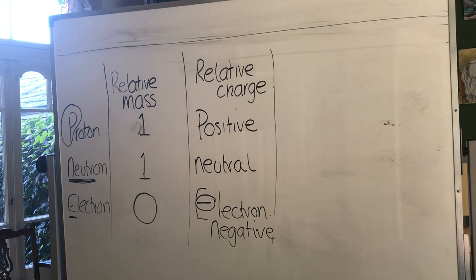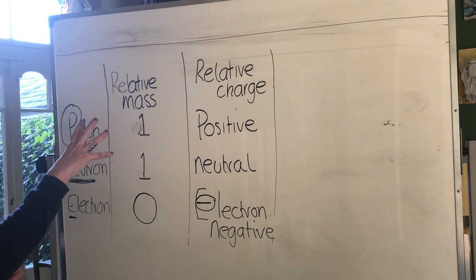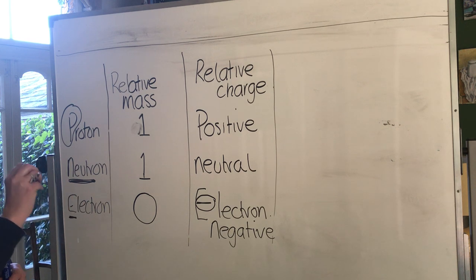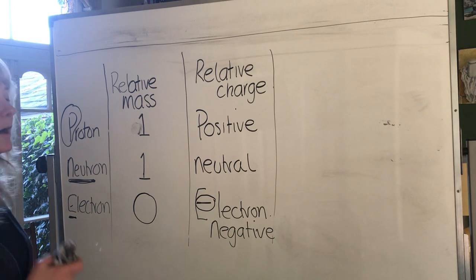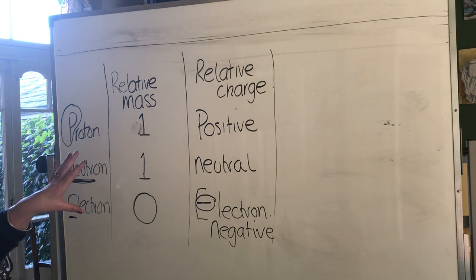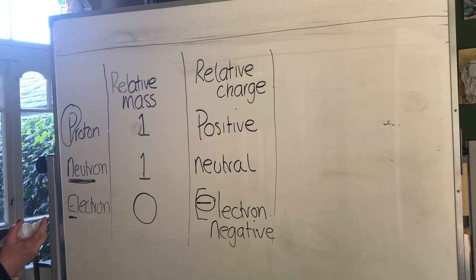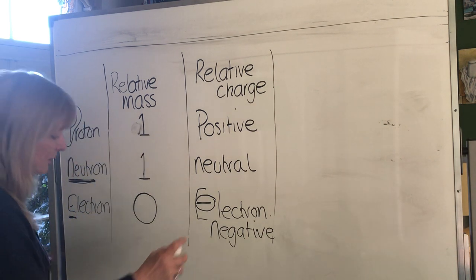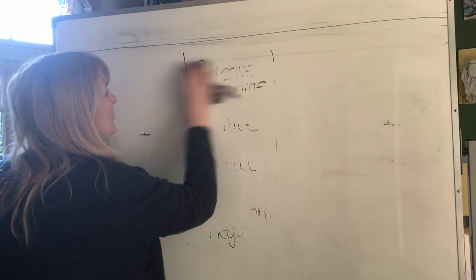It is really important that you get that information in your head - particularly which ones are negative, which are positive, which are neutral, and the mass. The fact that protons and neutrons have a relative mass of one, while the electron's mass is so small it's almost insignificant. That's the start of questions on atomic structure - do you know how the particles fit into the atom, and do you know the relative mass and charge?